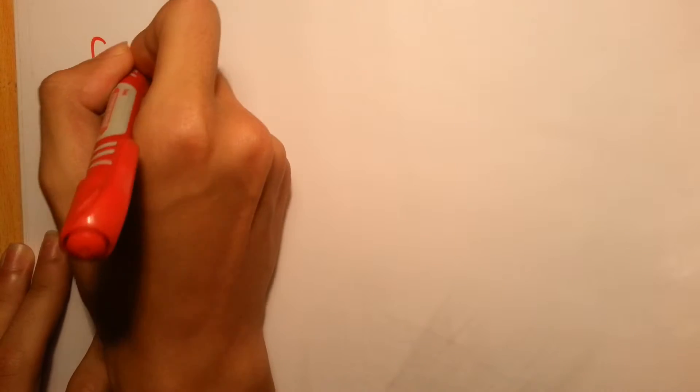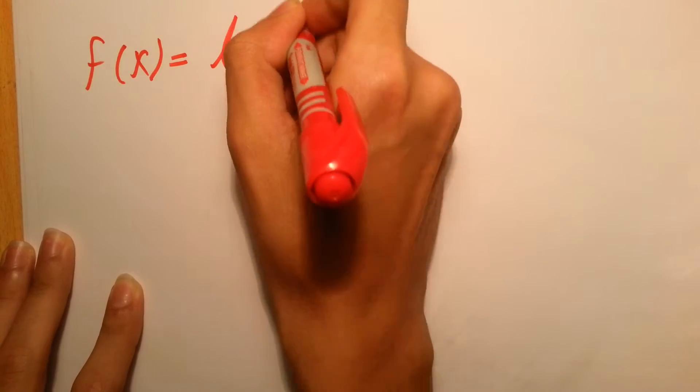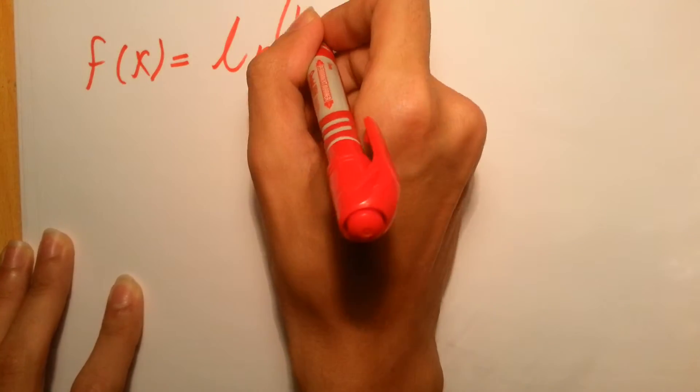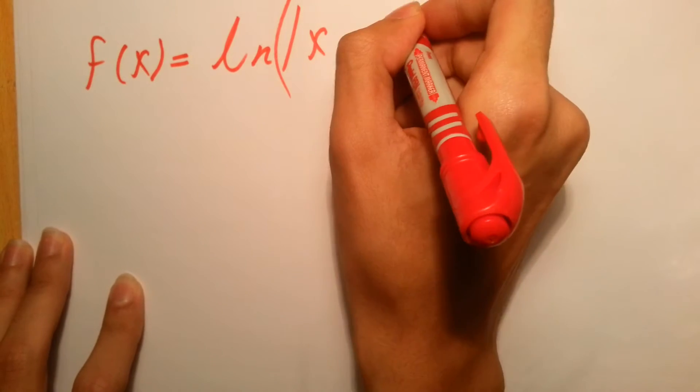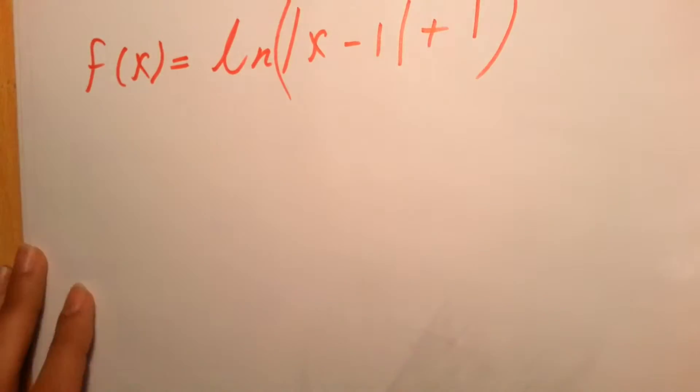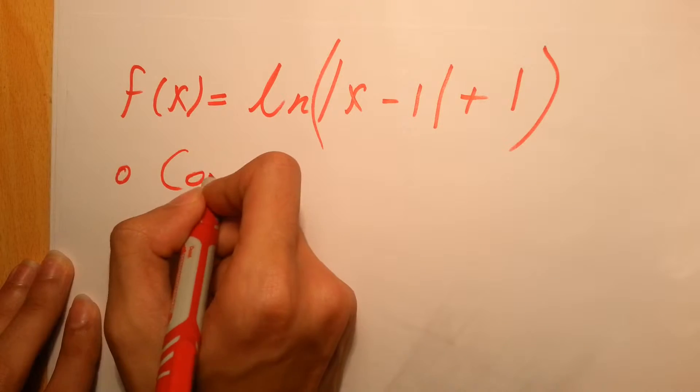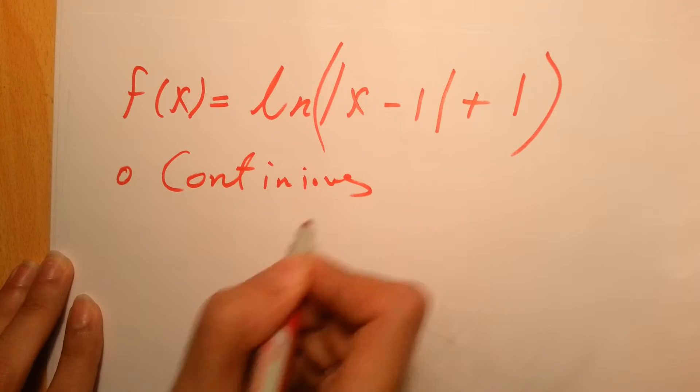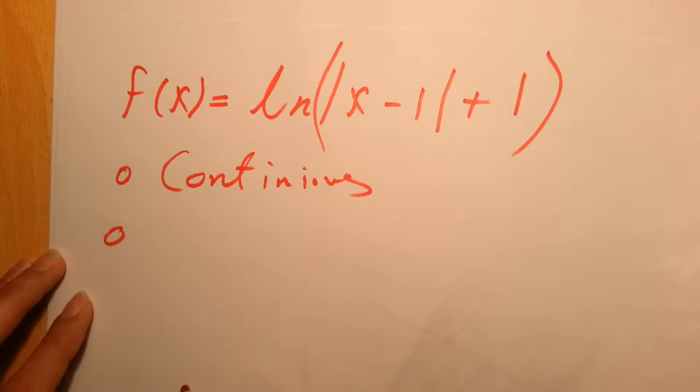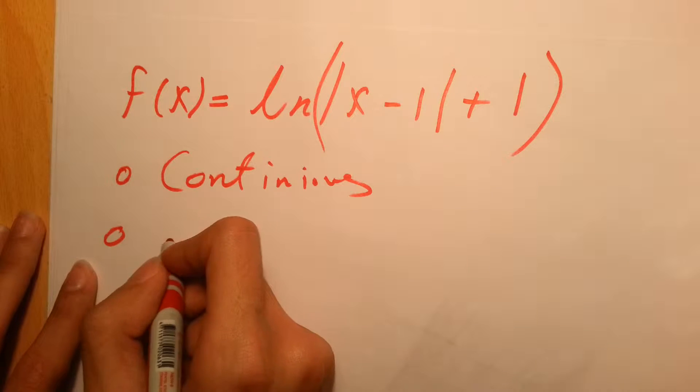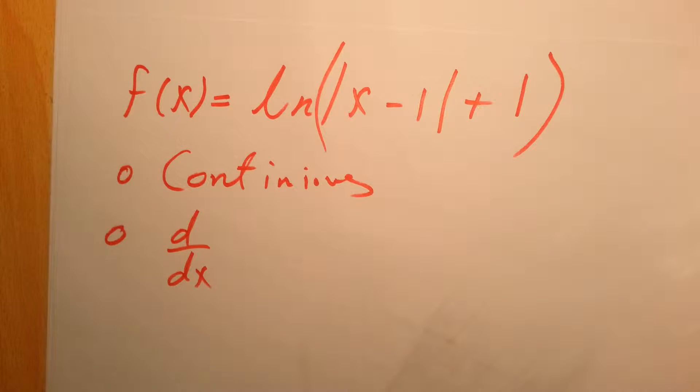Okay, so let's start our video. He said that the function f of x equals ln absolute value of x minus 1 or plus 1. He would like to check two things: first if it's continuous, and second he would like to check its derivative. So let's start with continuity.